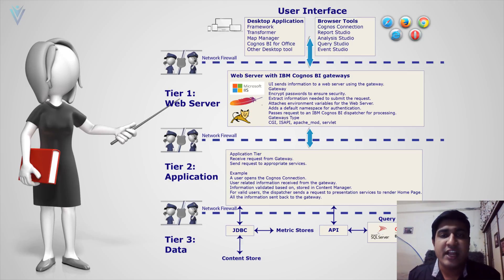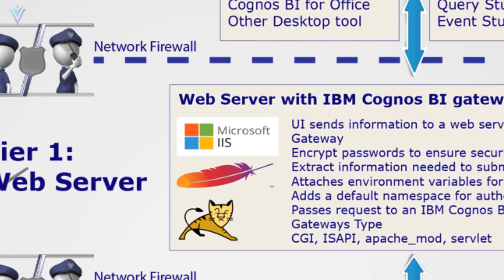Before closing this video, I need to share information on types of web server and types of gateway. IBM Cognos supports IIS, Apache, and Tomcat as web servers. IBM Cognos provides 4 types of gateway: CGI, ICPI, Apache mod, and Servlet. Based on the web server, we need to use the appropriate gateway. For IIS, ICPI is the recommended gateway. For Apache, we can use CGI or Apache mod, and in case of Java, we need to use Servlet.